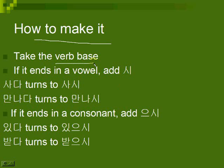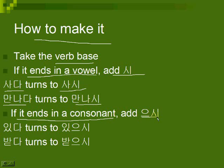Take the verb base — you find it in a dictionary, it has 다. Remove 다. If it ends in a vowel, add 시. For example, 사다 to buy turns to 사시. 만나다 to meet turns to 만나시. If it ends in a consonant, add 으시 — it's kind of rough to say 시 right after a consonant, so they're adding 으 to soften it. So 있다 turns to 있으시, and 받다 turns to 받으시.